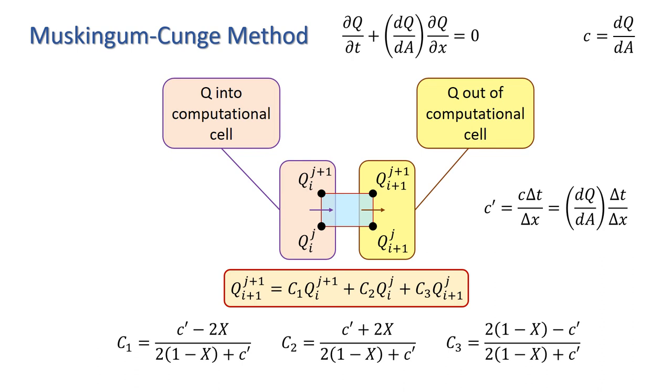You can see that this is very similar to the equation we saw for the Muskingum method, and you might like to compare the coefficients c1, c2, and c3 with those you derived for the Muskingum method.